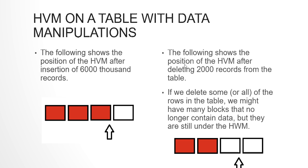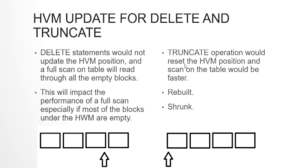That is because when you do a DELETE on a table, it will not reset the HWM to the new edge of blocks. It would still point to the block that had the maximum amount of data — whichever block ever contained data. So even if we delete some data, we might have a block that contains no data at the present moment, but the HWM still points there.